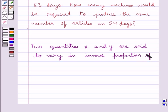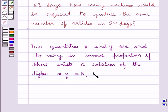If there exists a relation of the type x multiplied by y is equal to k, k being a constant. This is the key idea.